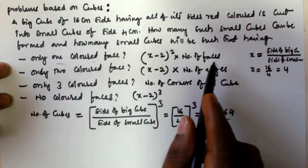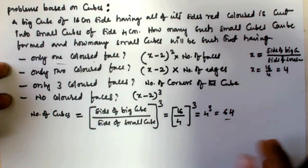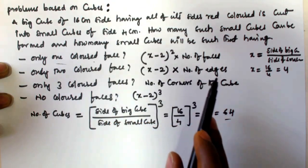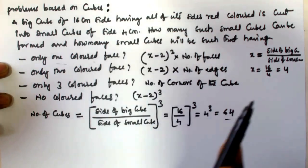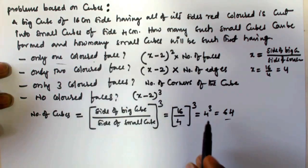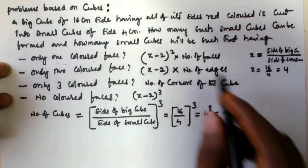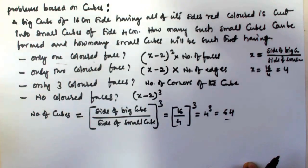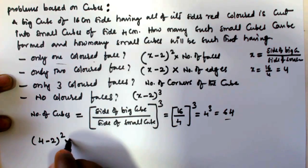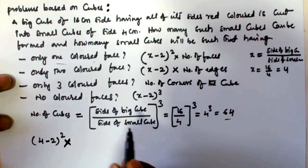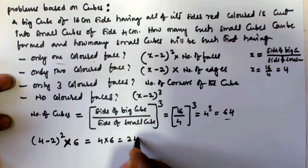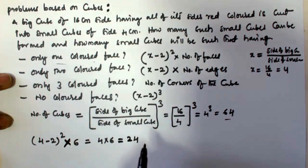So for only one colored face: (x minus 2) squared into number of faces. x is 4, so (4 minus 2) squared into number of faces. A cube has 6 faces, so that is 2 squared, which is 4, multiplied by 6, equals 24. That means 24 cubes have only one colored face.